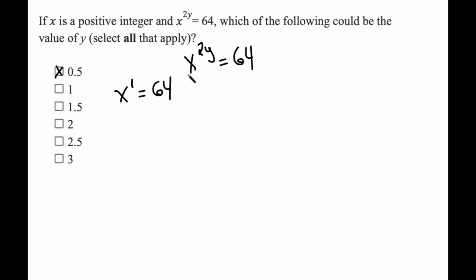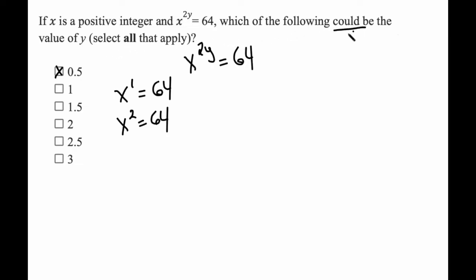How about 1? If I plug in 1, I get x to the power of 2 times 1, that's x to the power of 2 is equal to 64. And sure enough, 8 times 8 is 64, so x could be a positive integer. Now, x could also be a negative integer — it could be negative 8 times negative 8 — but as long as we have one positive case, it could be the answer. That's the phrasing. So 1 works.